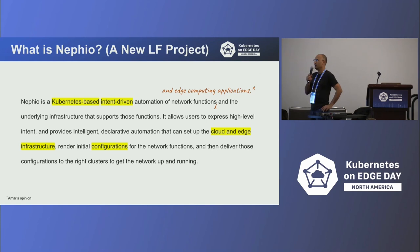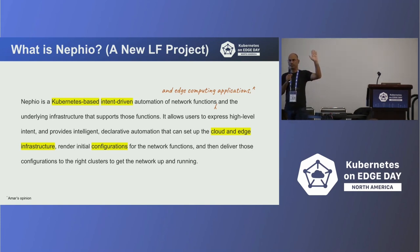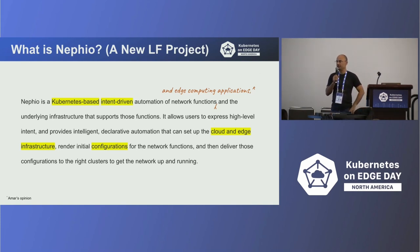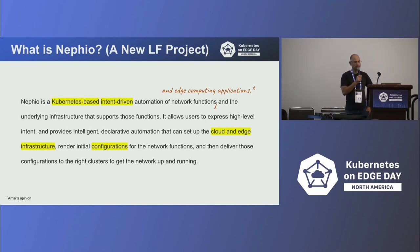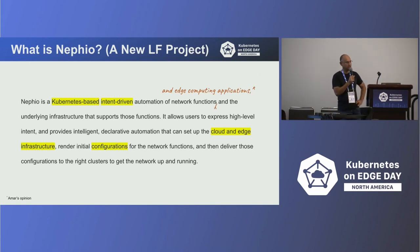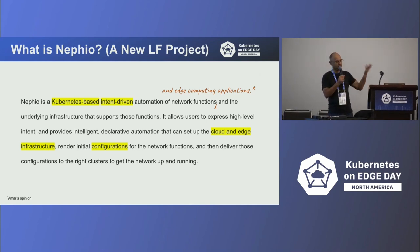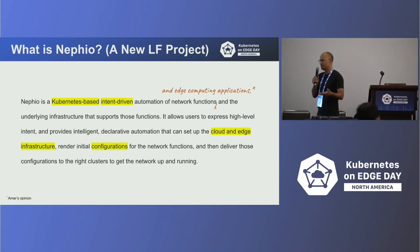That's exactly Nephio. It's a new Linux Foundation project started this summer. It's a Kubernetes-based, intent-driven system that can be used for network functions, edge computing applications, and the underlying infrastructure. You can set up cloud and edge infrastructure with initial configurations and then deploy and manage network services and workloads on top.